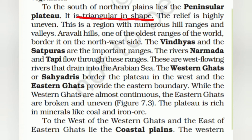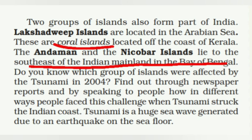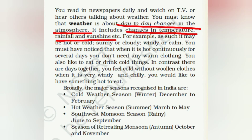The Great Indian Desert is in Rajasthan. The Peninsular Plateau is triangular in shape, covering Madhya Pradesh and Maharashtra. The Vindhyas and Satpuras are here; Narmada and Tapi flow through these ranges, draining into the Arabian Sea. Western Ghats are also known as Sahyadris. Eastern Ghats are broader; rivers like Mahanadi, Godavari, and Krishna flow eastward, and the Sundarbans delta is notable. Lakshadweep Islands are coral islands off the coast of Kerala. Andaman and Nicobar Islands lie southeast in the Bay of Bengal.